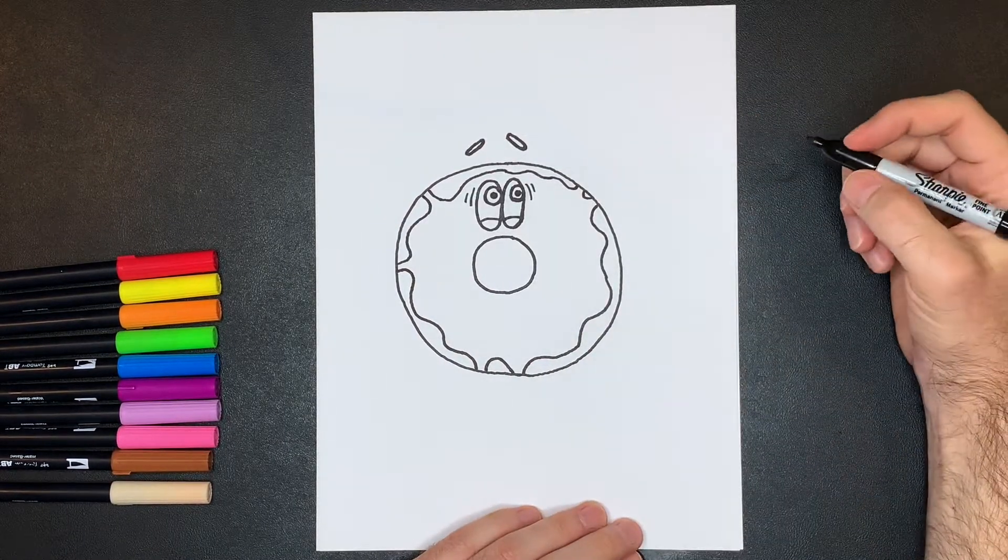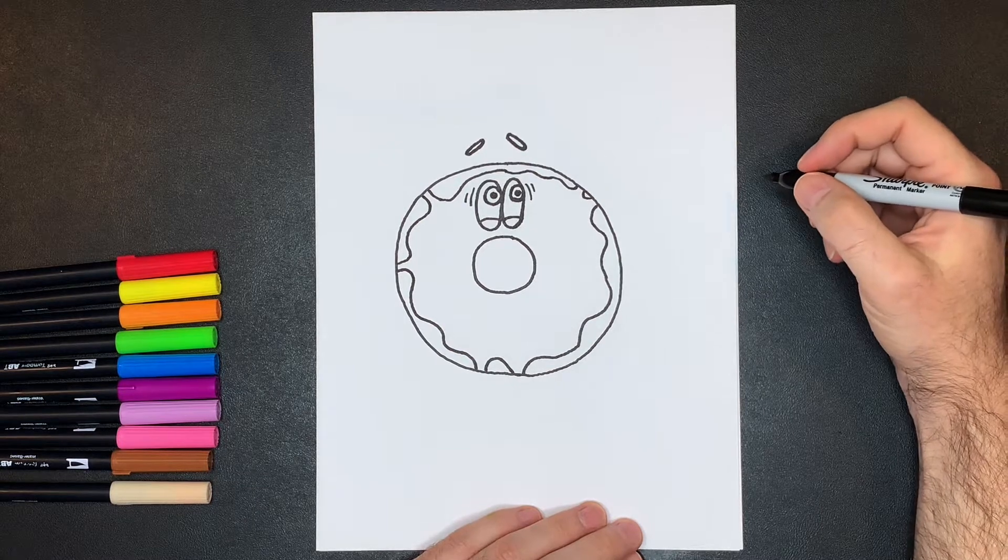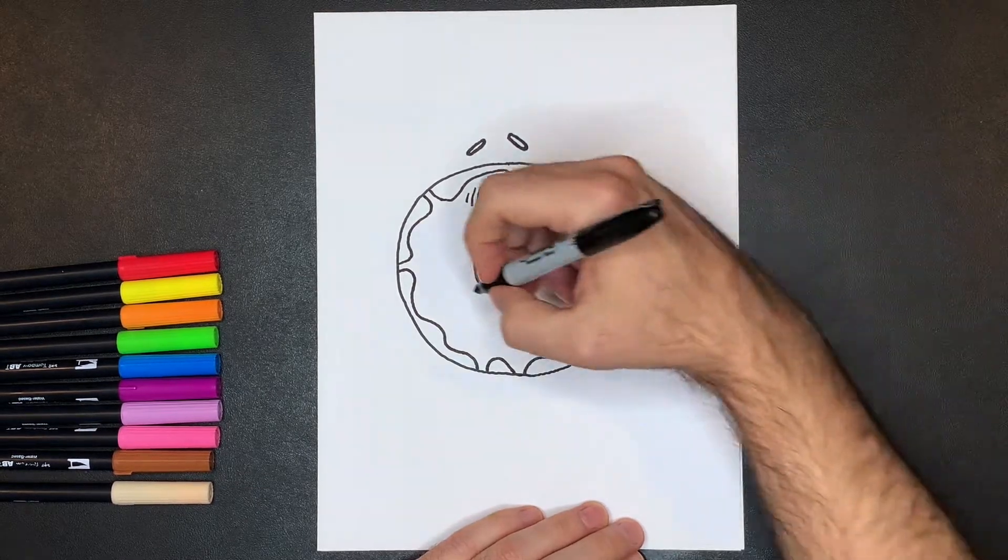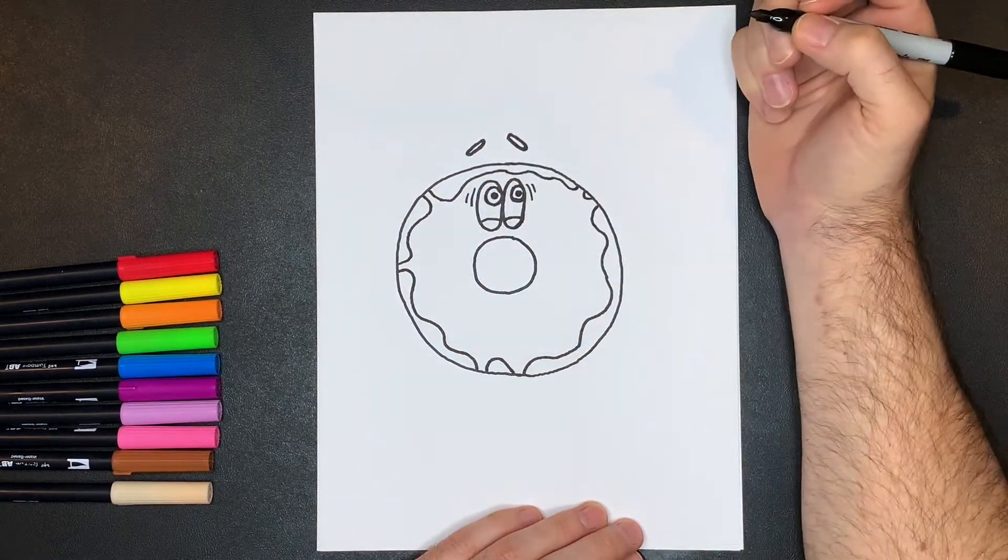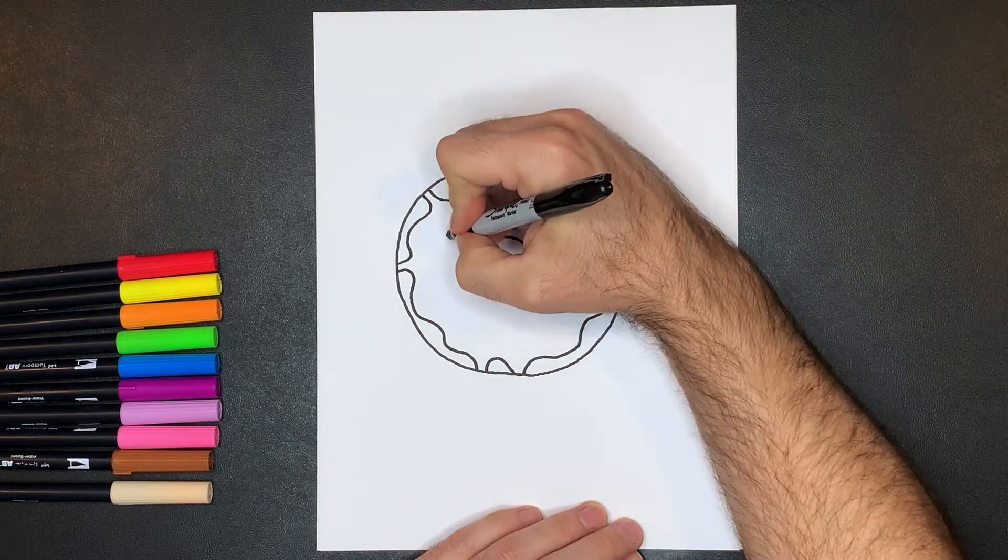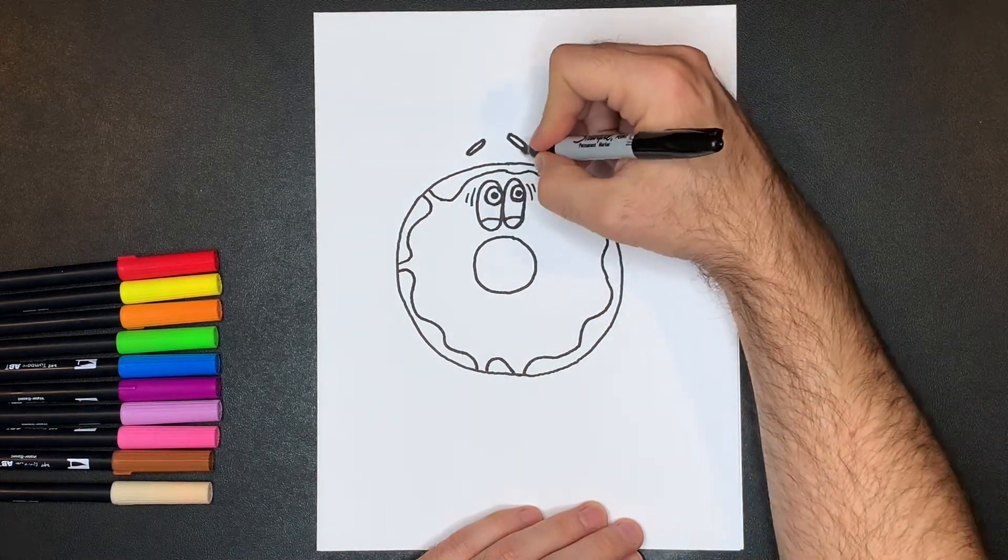Alright, next we're going to draw some more sprinkles because my donut has sprinkles on it, and I like sprinkled donuts in general. So we're just going to make some oval shapes, kind of like we did up here with the eyebrows.